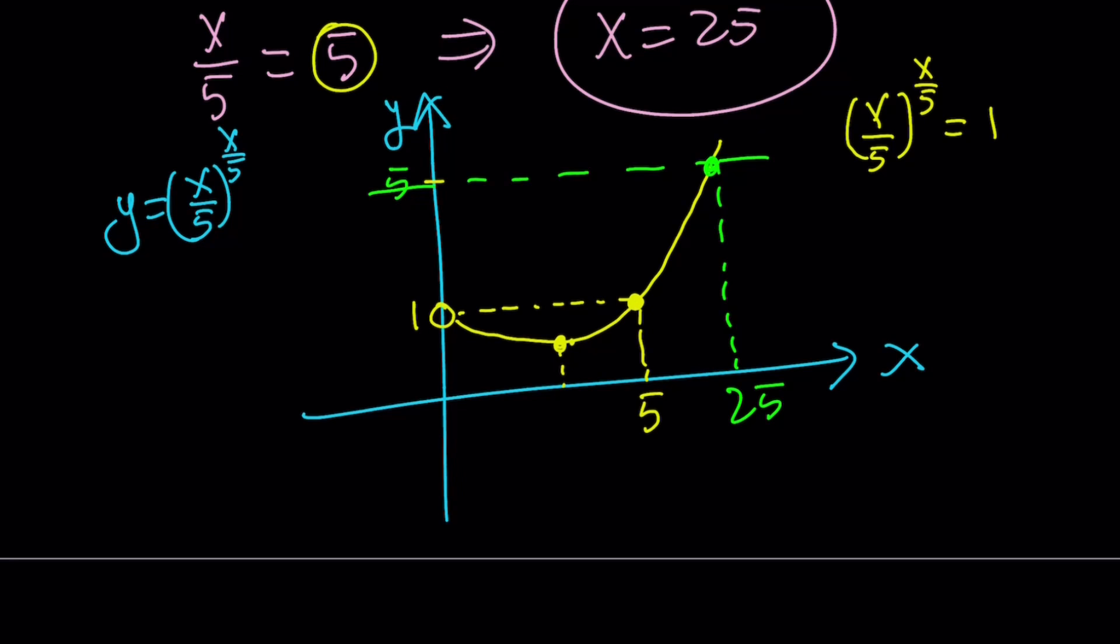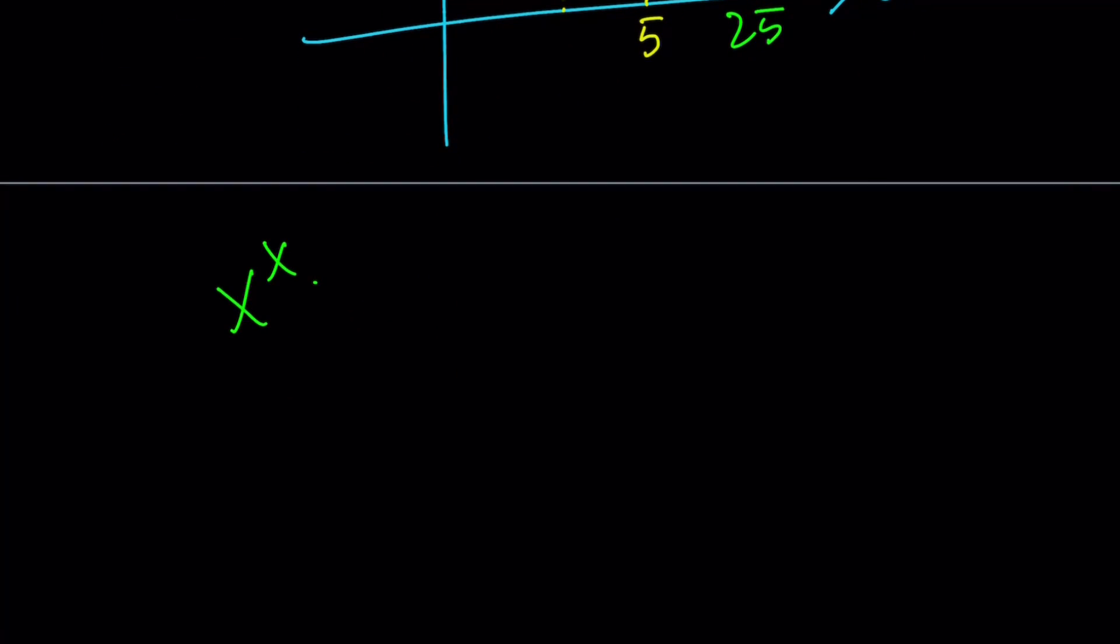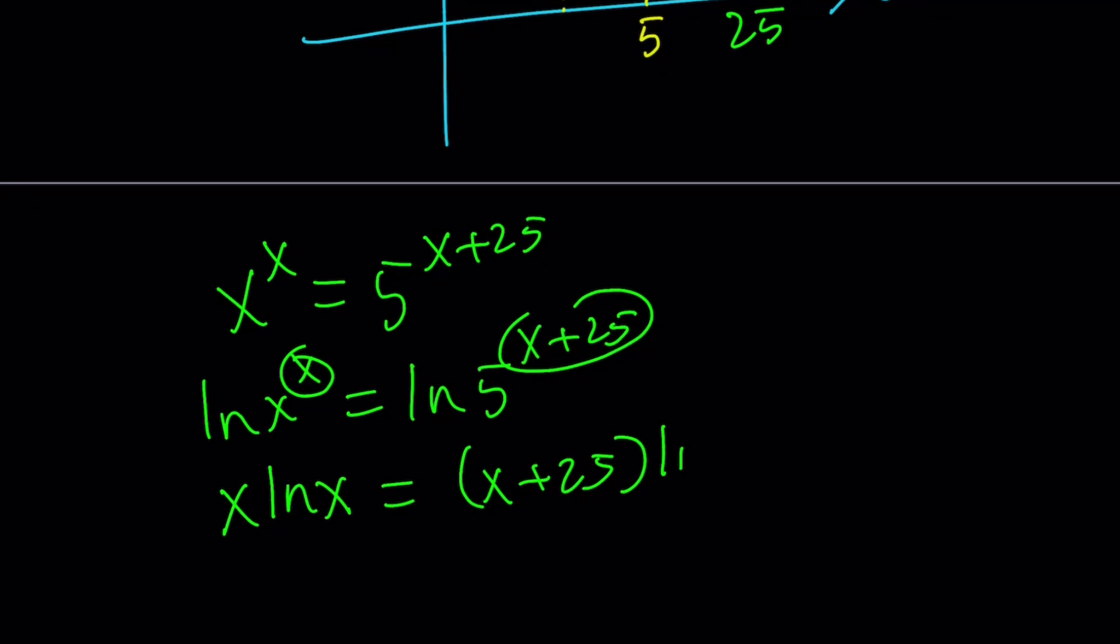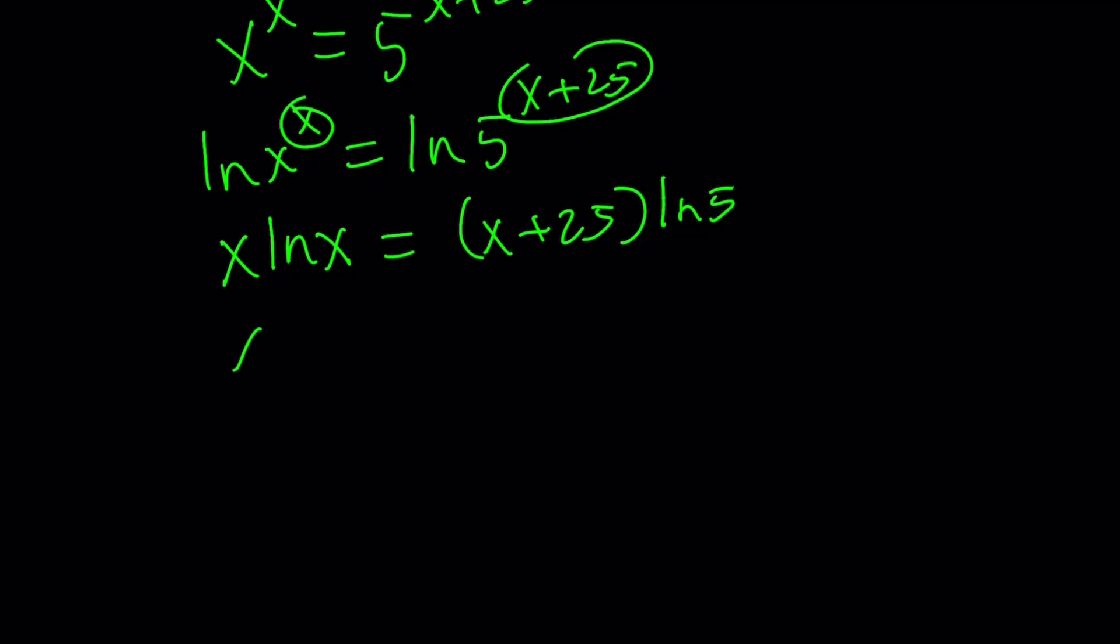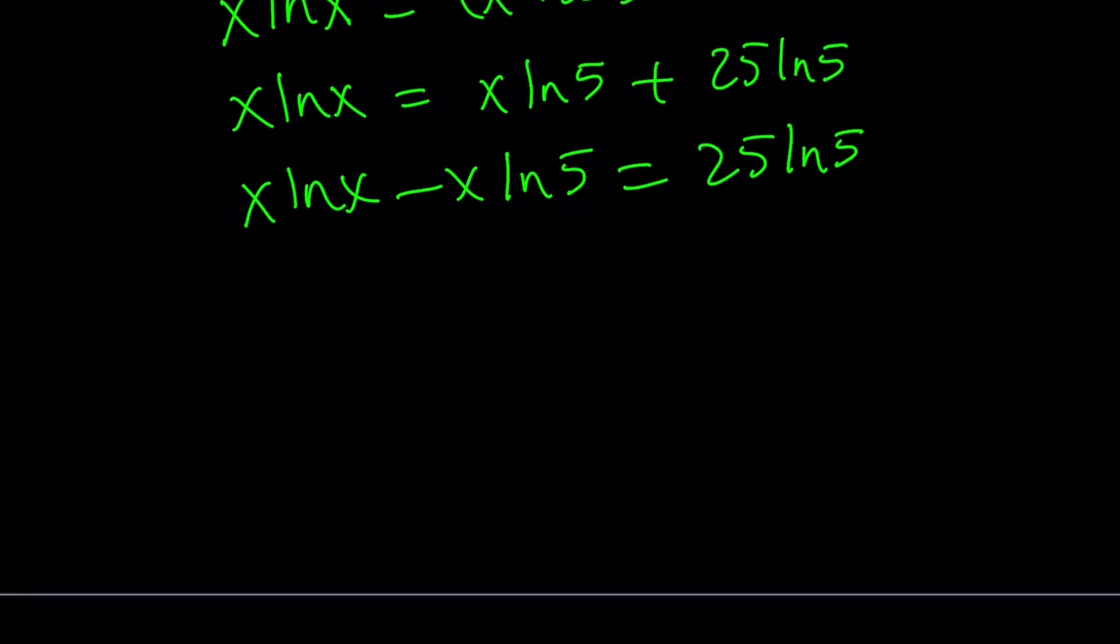Let's take a look at another approach. Here's another way to look at the problem. We have x to the x equals 5 to the power x plus 25. Why don't we ln both sides? Because a lot of times, ln-ing both sides helps. So, if you ln both sides, then you can move the powers to the front. You get x ln x equals x plus 25 times ln 5. Let's distribute: x ln 5 plus 25 ln 5. It's just looking at it from an ln perspective.